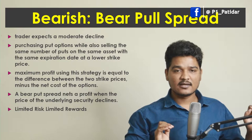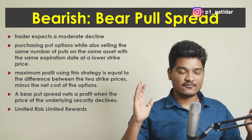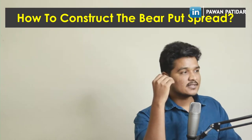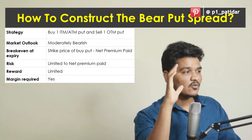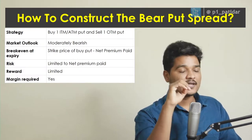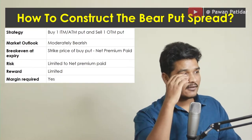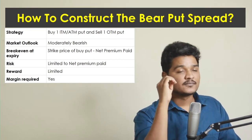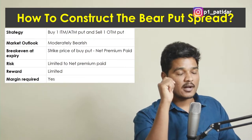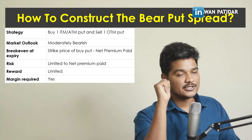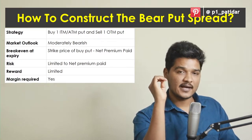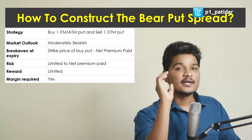You can think of this strategy as a stop loss — if the trade goes against you, your loss is fixed. To construct the bear put spread, you buy one in-the-money or at-the-money put and sell an out-of-the-money put. The market outlook is moderate bearish — we are not expecting a huge move, but we are expecting a negative move in that particular asset.